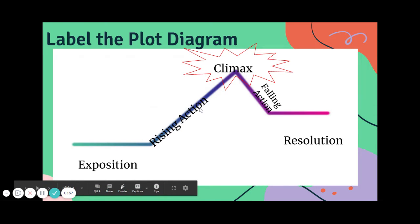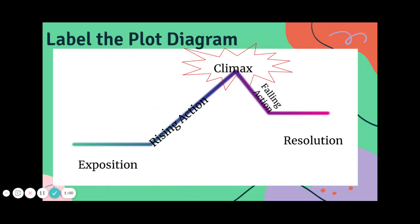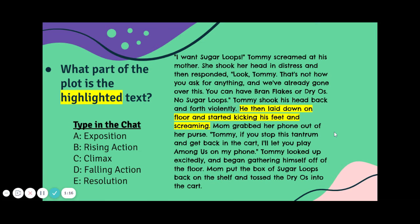Rising action is where our events start picking up — that suspense and action start building. Our climax is our kaboom moment, the most suspenseful and crazy moment of the story. Next we have falling action, where everything kind of starts to slow down. And then our resolution, where the story ends and we find out what happens.